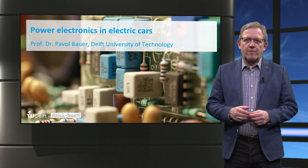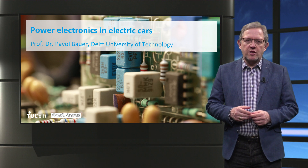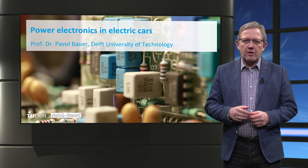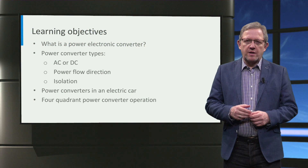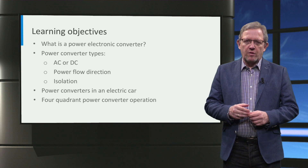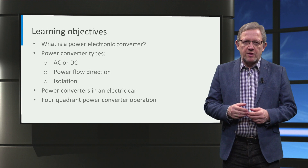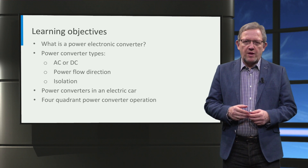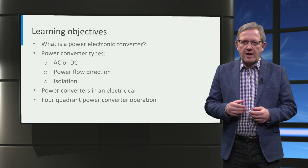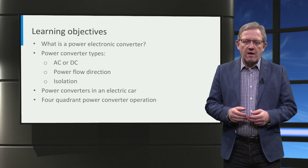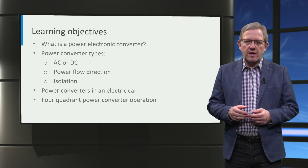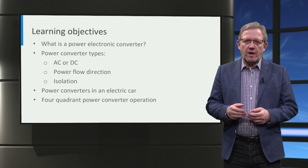Ladies and gentlemen, welcome. In this lecture we will look at the basics of power electronic converters on electric cars. First we will look at what is a power electronic converter. Then we will look at the different converter types based on whether it powers AC or DC, direction of power flow and the presence of isolation. Finally, we will look at the converters in an electric car and understand the concept of four-quadrant converter operation.